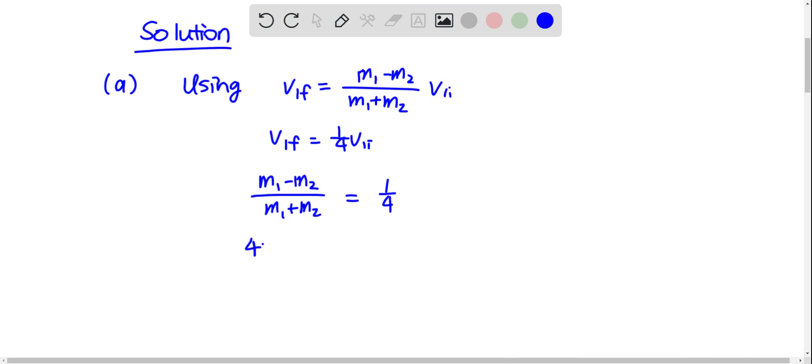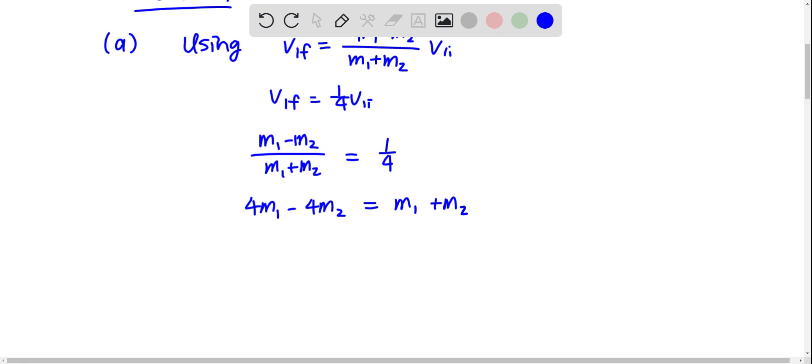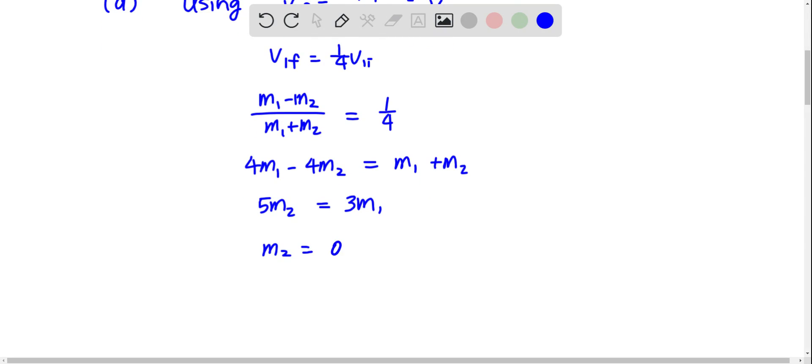So we have 4M1 minus 4M2 equals M1 plus M2. And so M2 is 0.6 times M1. M1 is 2 kg, so M2 is 1.2 kg.